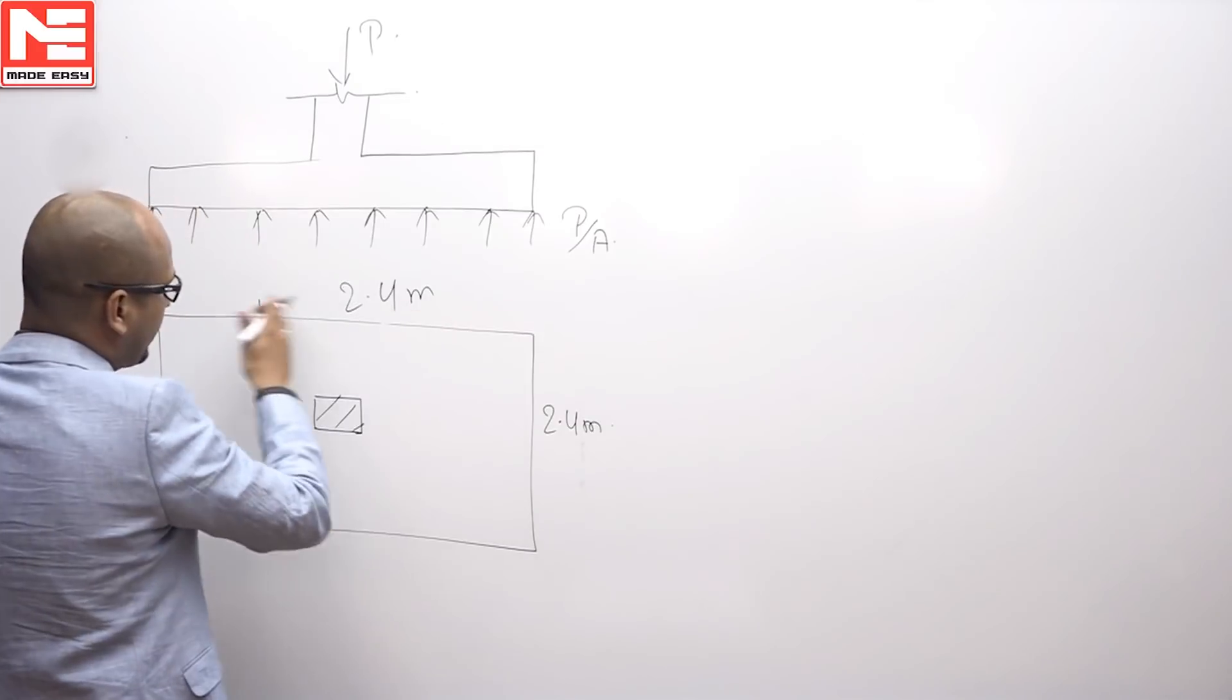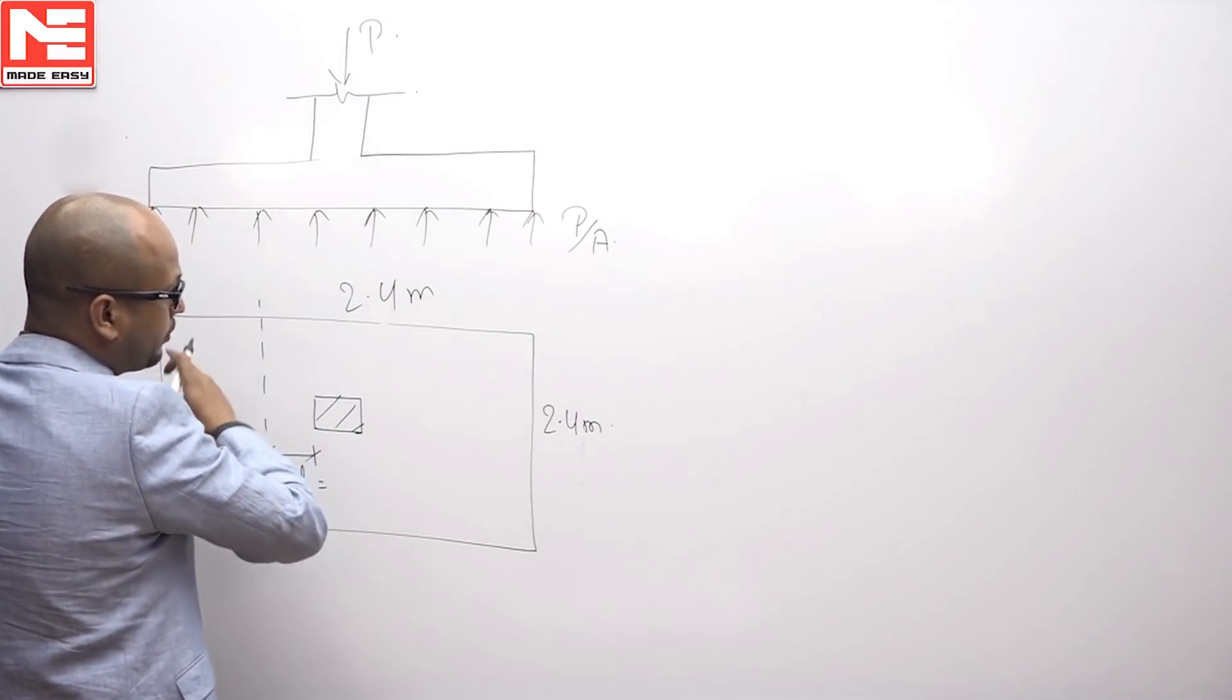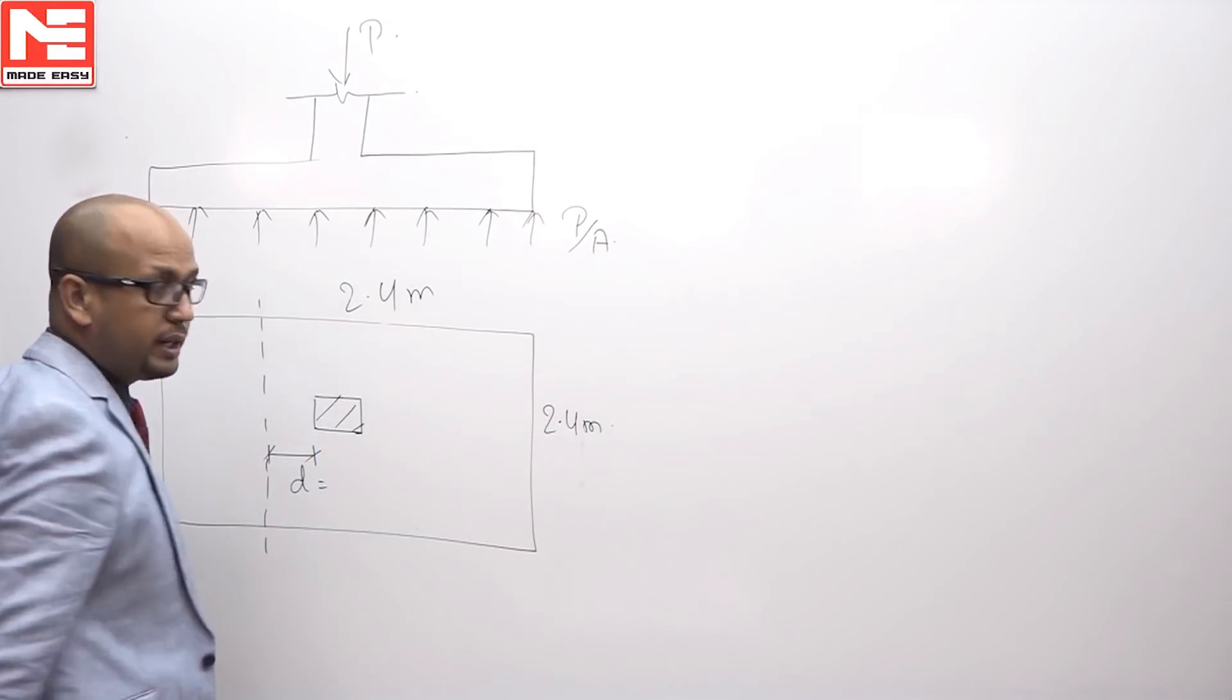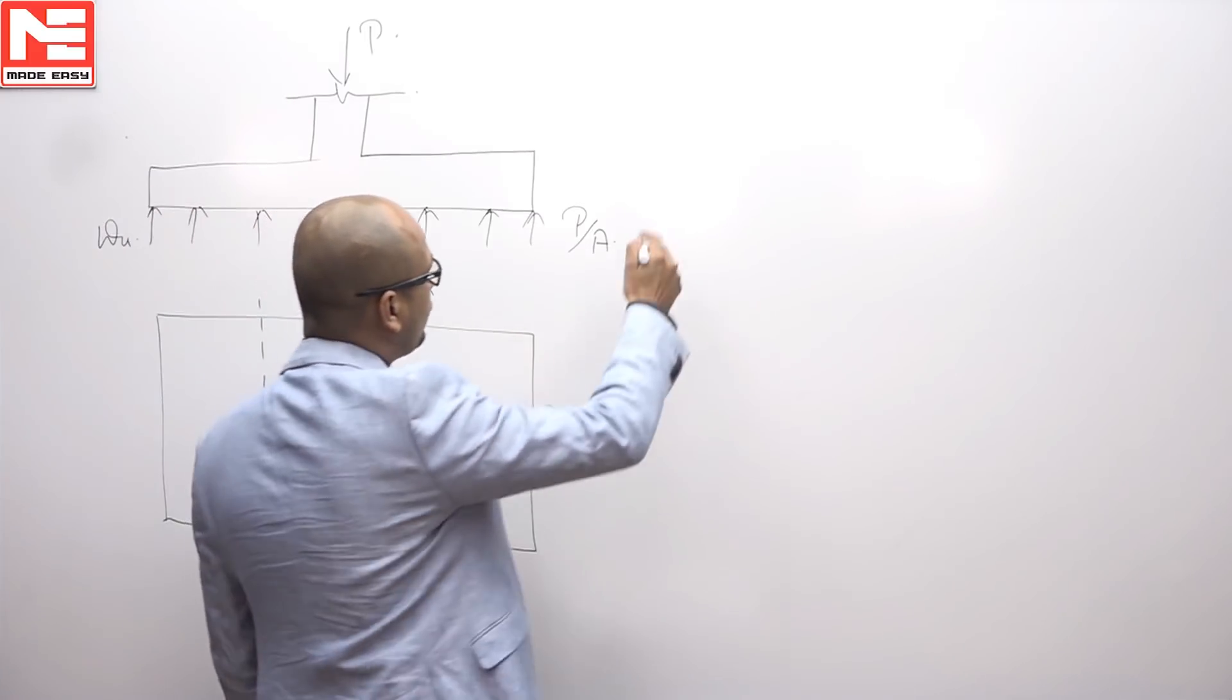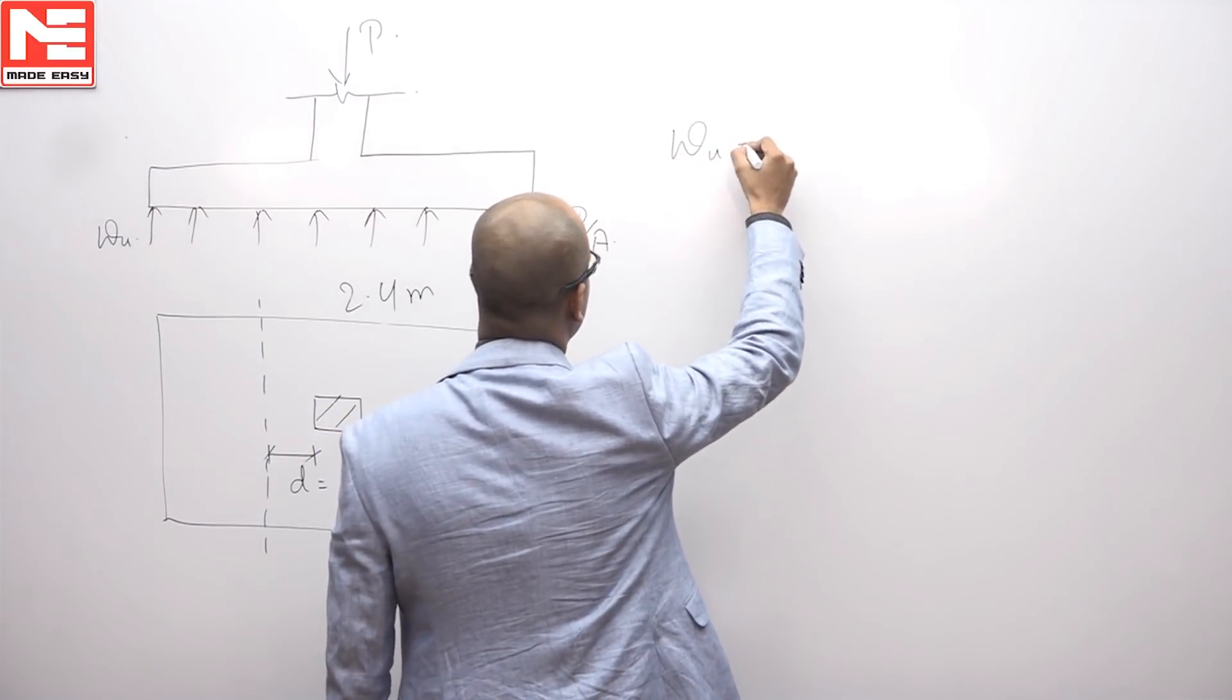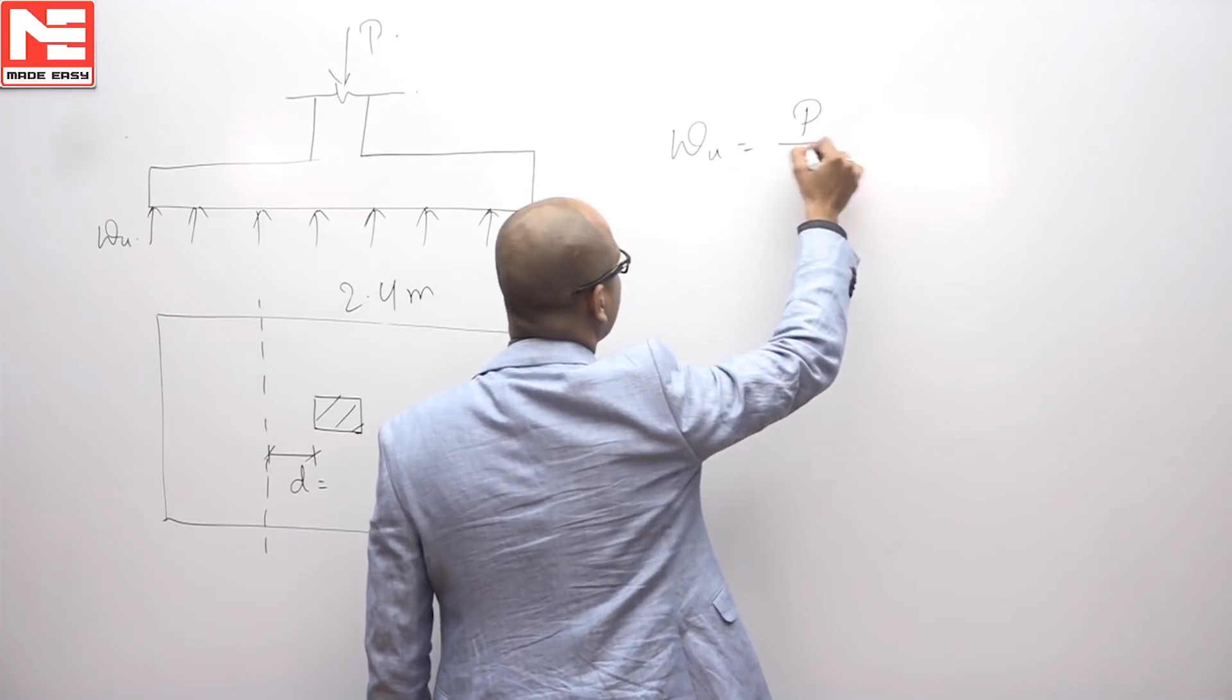Wu and then footing in plan is 2.4 and 2.4. First of all you have to calculate Wu is equal to P by A.